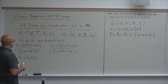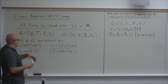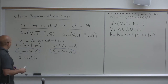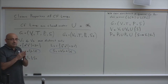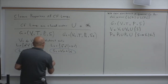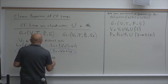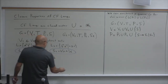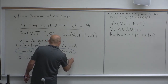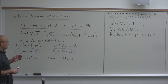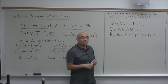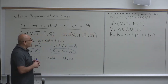The language of the union contains strings that have either a certain number of A's followed by the same number of B's, or a certain number of B's followed by the same number of A's. A string belongs to the union if it belongs to one of the languages being united.